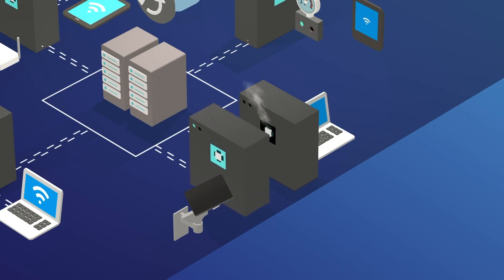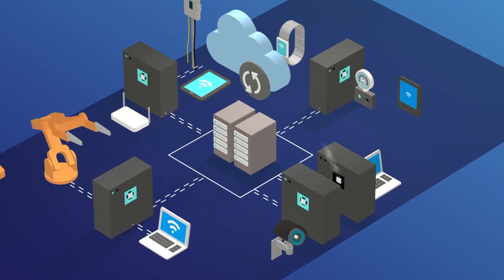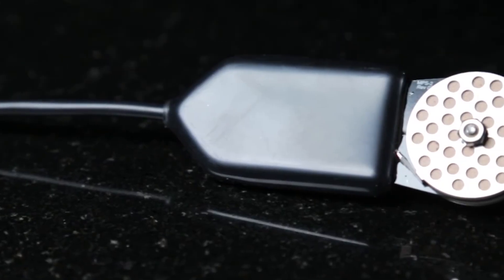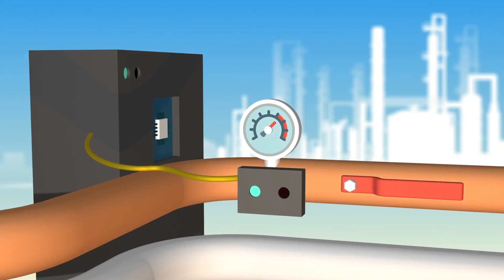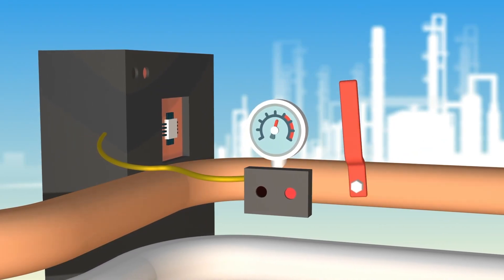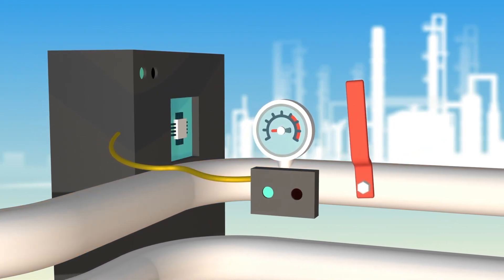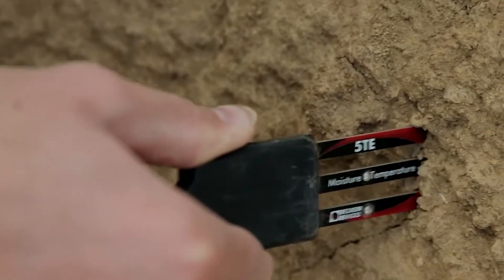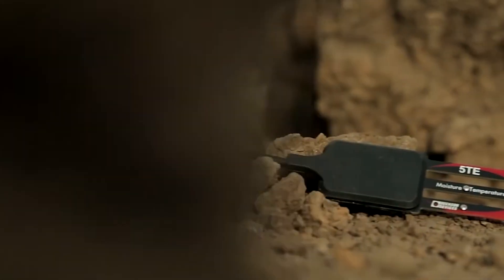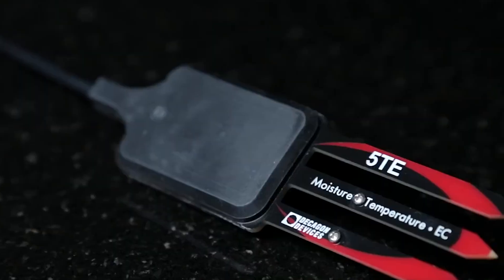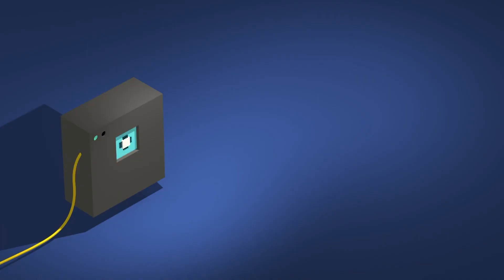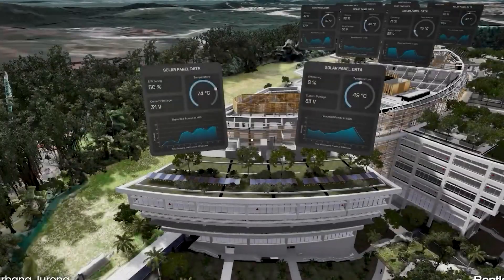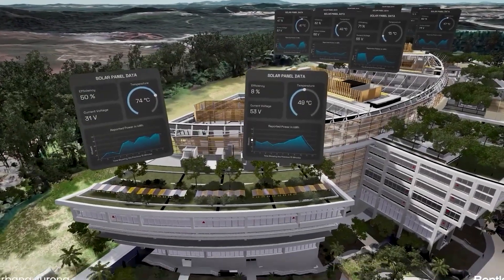Farmers use distributed soil sensor networks to determine exactly when irrigation is needed, which simultaneously boosts crop yields while conserving enormous quantities of water in regions facing scarcity. Manufacturing facilities monitor thousands of machines in real time using predictive algorithms to identify and address potential problems before breakdowns occur, dramatically reducing costly downtime and production disruptions. Shipping companies track every single package down to the second, with integrated systems that can instantly reroute shipments if disruptions emerge anywhere in complex global logistics chains.